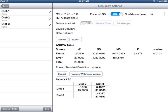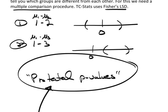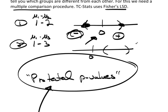If zero is in the interval, then they're not different. The only way for zero to be in the interval is if the left endpoint is negative and the right endpoint is positive. So if I have a negative on the left and positive on the right, zero's in the middle. If I have both positive, I know I'm above. If I have both negative, I know I'm below. Either way, zero is not in the interval.